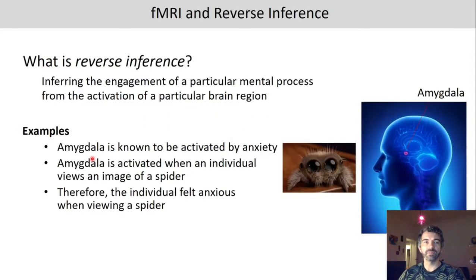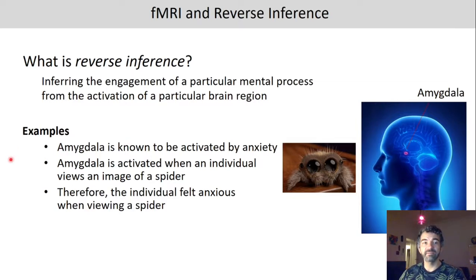What is reverse inference? It refers to inferring the engagement of a particular mental process from the activation of a particular brain region. As an example, the amygdala is known to be activated by anxiety, and if we measure the amygdala and see that it is activated when an individual views an image of a spider, we might infer that this individual felt anxious when viewing a spider.